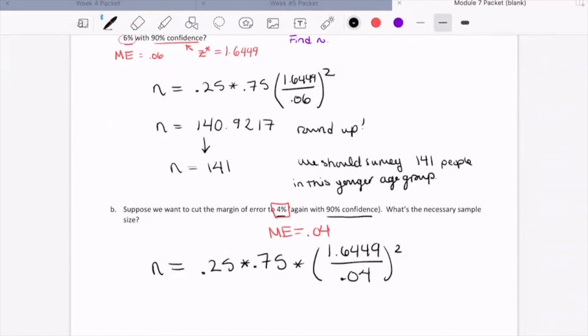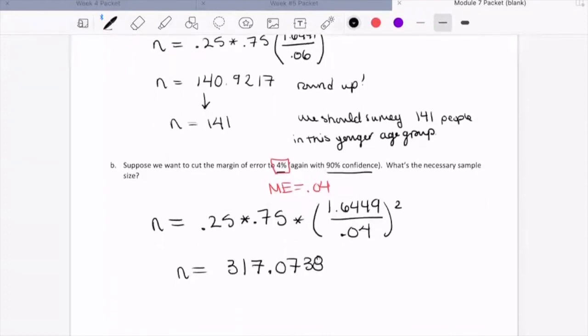So go ahead and pause the video to make that calculation. And when you're ready, we can compare answers. You should be getting 317, 317.0738. So here do we round down to 317? Nope. We always round up. So for us, that's going to be n is equal to 318. So now we should sample or survey 318 people in the younger group.